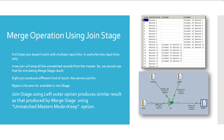By using the left join option in join stage, I was able to produce the same result as that produced by merge stage with keep option. No other joins helped in producing any sort of merge behavior when we have three input links as we have in this case.